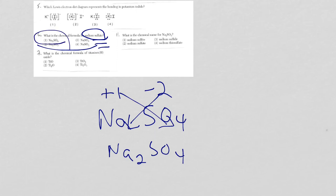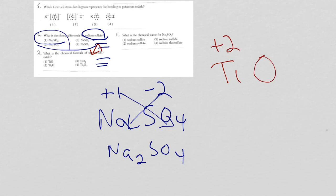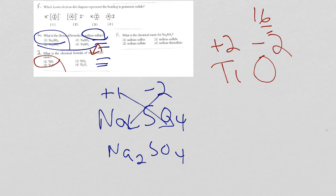Let's go to number seven: titanium Roman numeral II oxide. The Roman numeral II means that the charge for titanium is plus 2, so it's Ti²⁺. Oxygen is in group 16 — it has 6 valence electrons, 2 more to be like a noble gas — so oxygen is minus 2. Since it's 2 to 2, we reduce it to 1 to 1. So the answer is choice one.